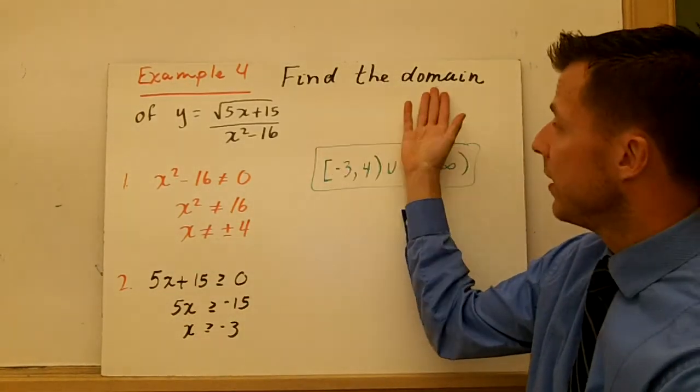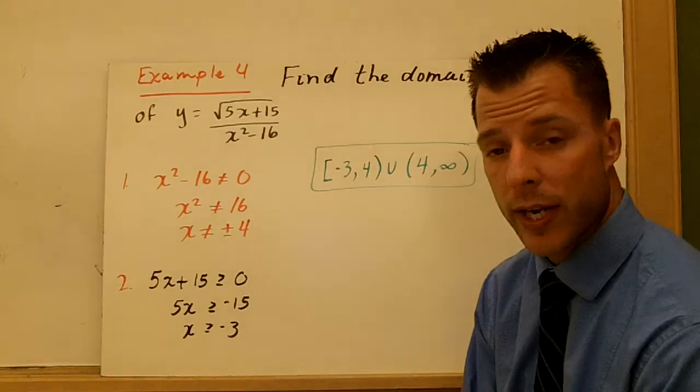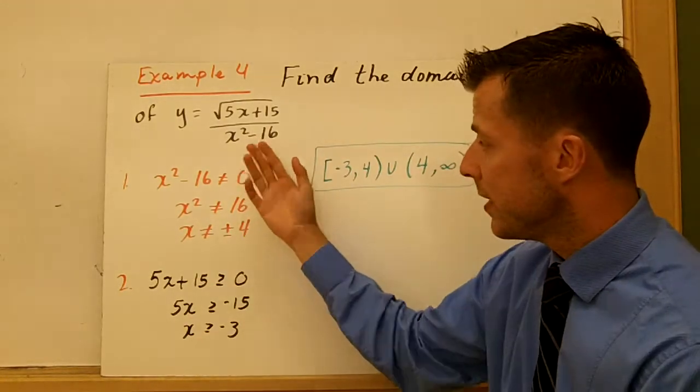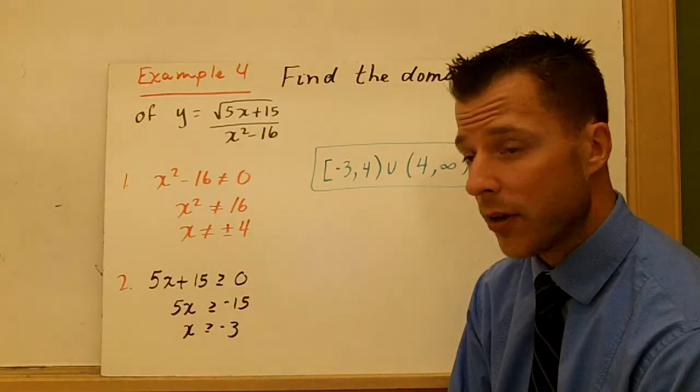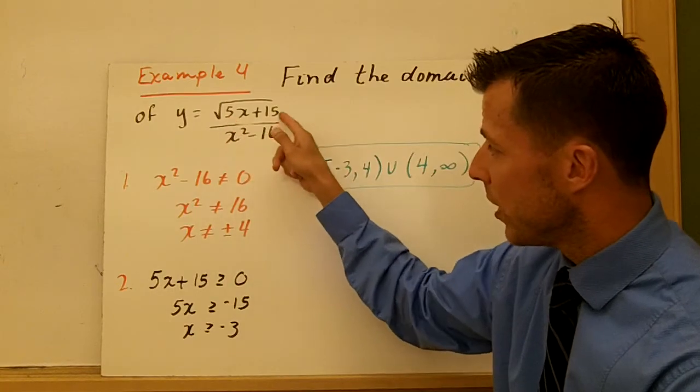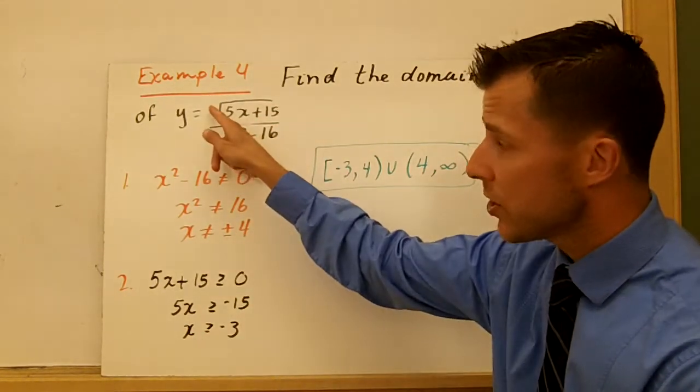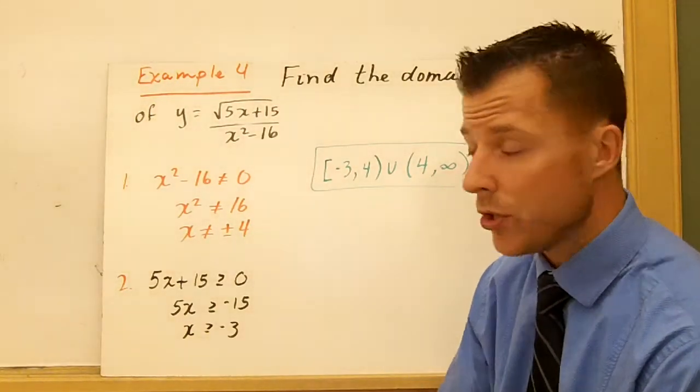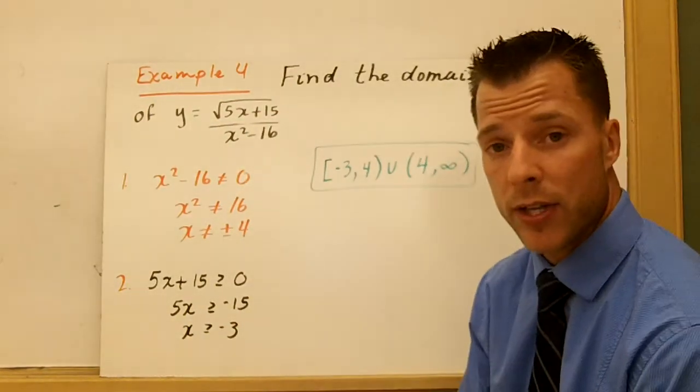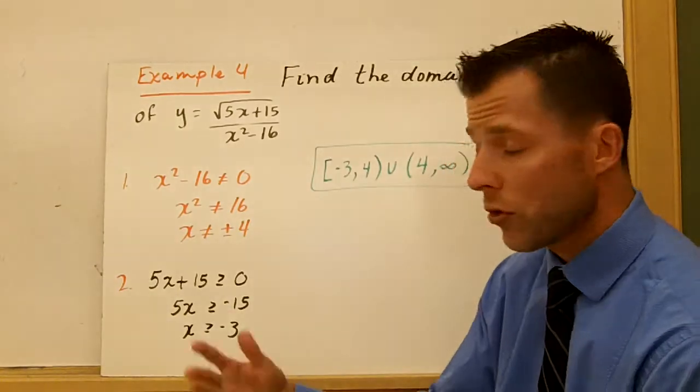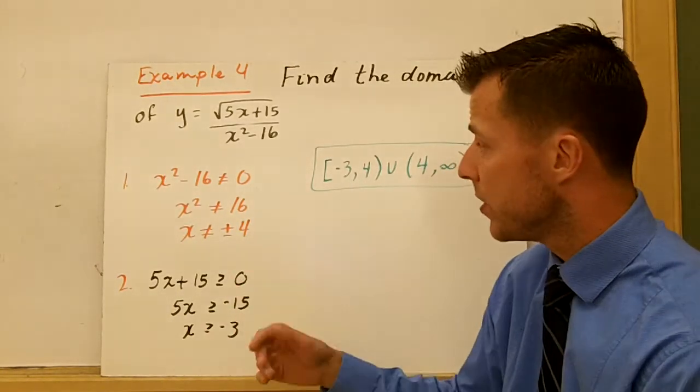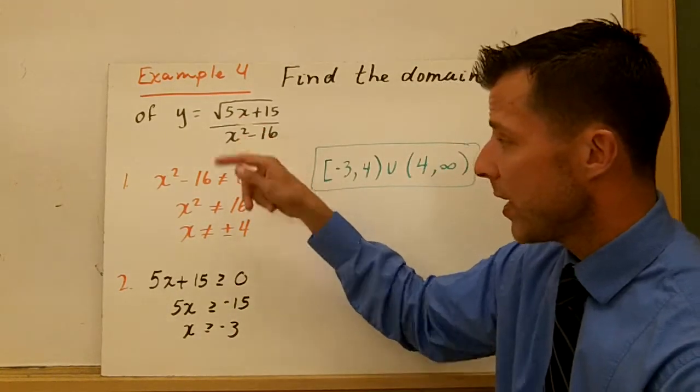In our last example, we have find the domain of this function. So I see the denominator. Denominator can't be zero, but then I also have to look at the numerator. Now, the numerator can be zero, but the numerator, since this is a square root, has to be greater than or equal to zero. You can't have a negative under that radical. So it's okay to have a numerator of zero. We just can't have that radical be negative.